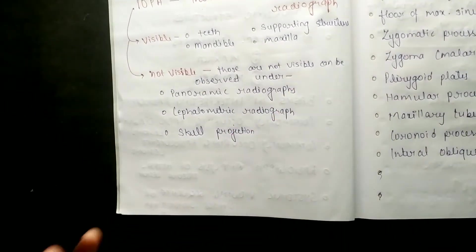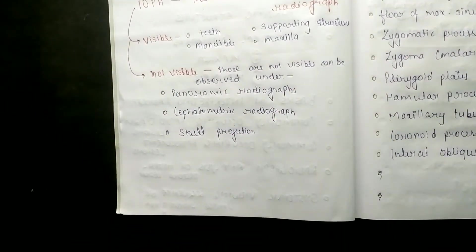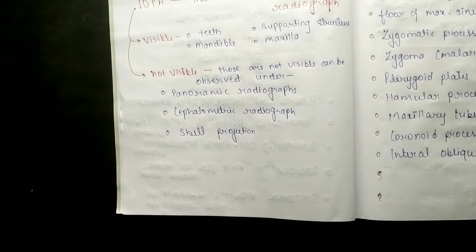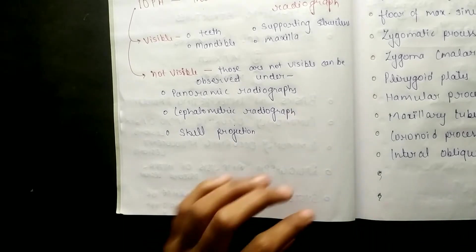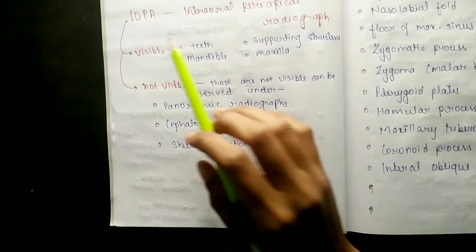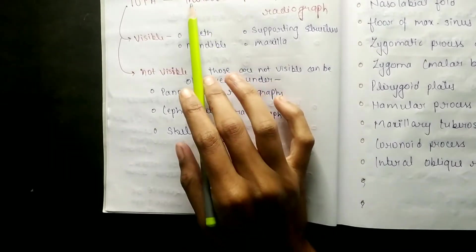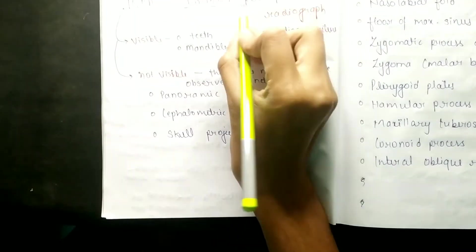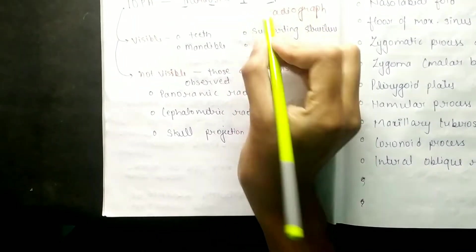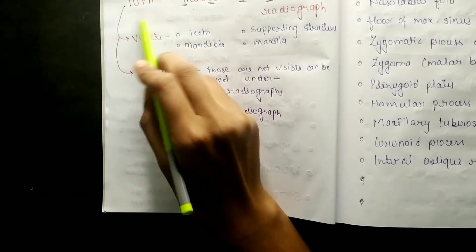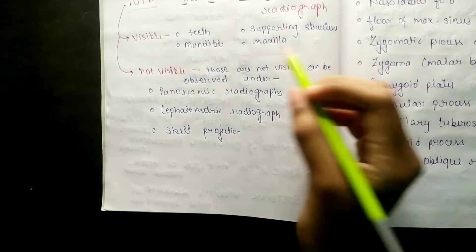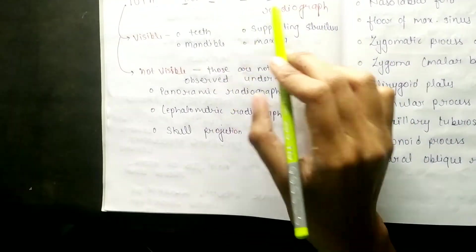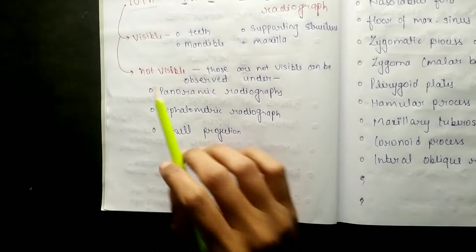Now, the radiograph we take is intraoral - we call it IOPA. The full form of IOPA is Intraoral Periapical - it's an intraoral periapical radiograph. In this, the teeth are visible, along with supporting structures - mandible and maxilla - all visible on a single x-ray film.